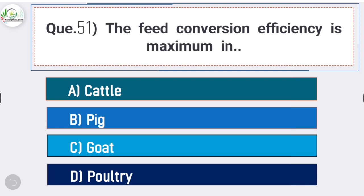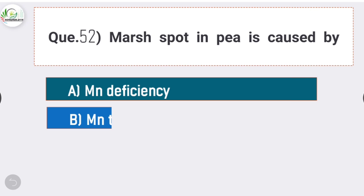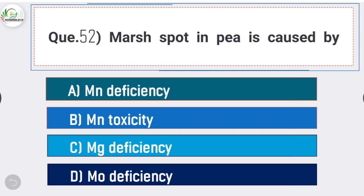Question number fifty-one: feed conversion efficiency is maximum in - answer is option B - pig. Question number fifty-two: marsh spot in pea is caused by - answer is option A - manganese deficiency. Marsh spot in pea is caused by manganese deficiency.